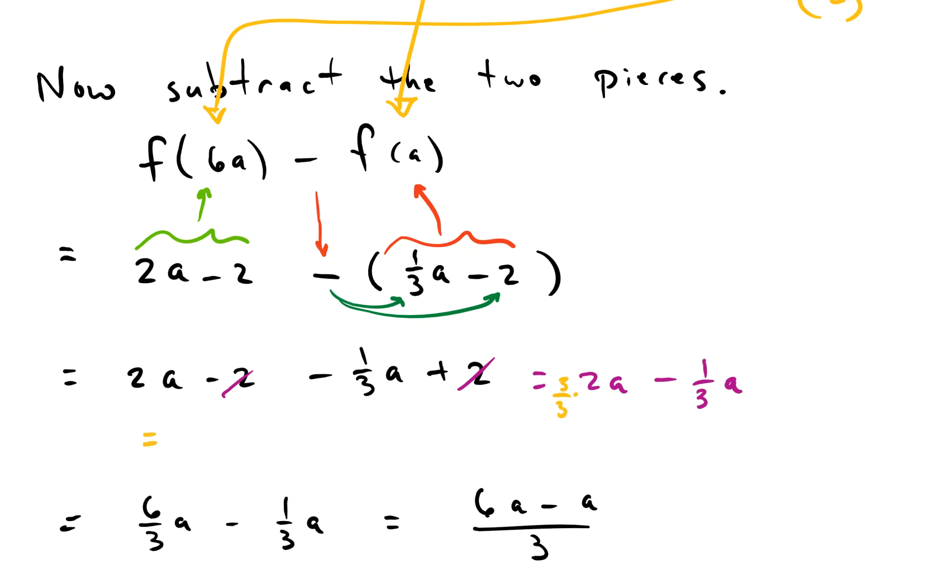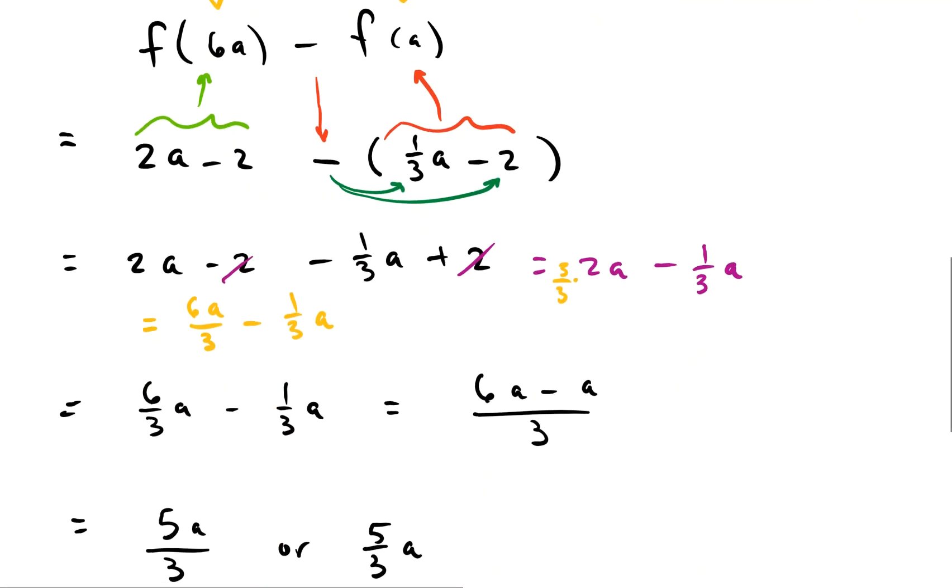That gives us 6a over 3 minus 1/3 a. And once we have 6a over 3 minus 1/3 a, we have the same denominator, so we can just take the tops and subtract them.